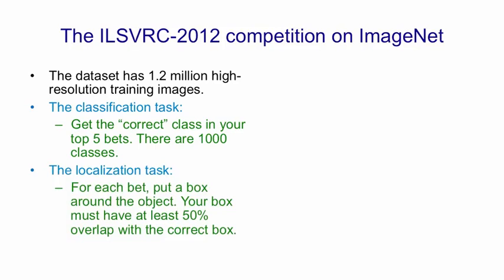There's also a localization task. The reason for it is that many computer vision systems use a bag-of-features approach — for the whole image or a quadrant of the image, they know what features are present but not where they are. This allows them to recognize objects without knowing exactly where they are. That's very unlike how people behave, except people with a curious kind of brain damage called Balint syndrome, where they can recognize objects but not be sure where they are.